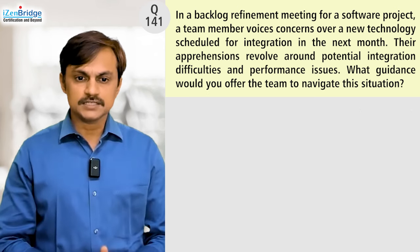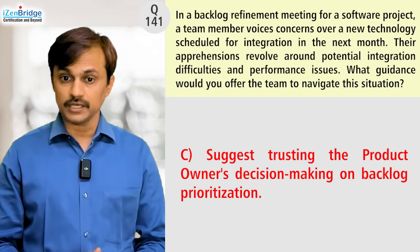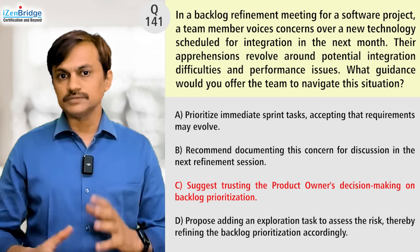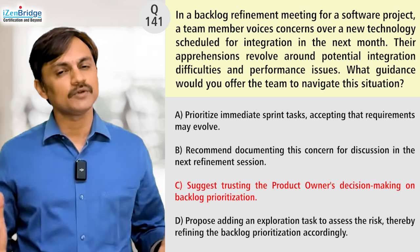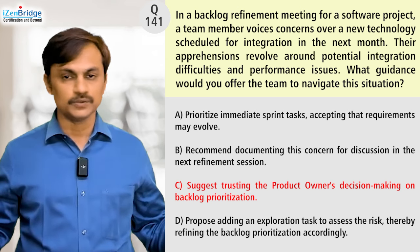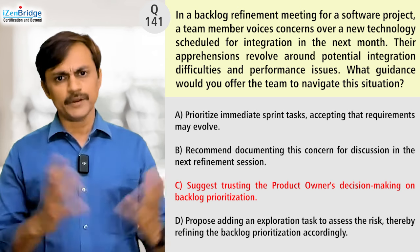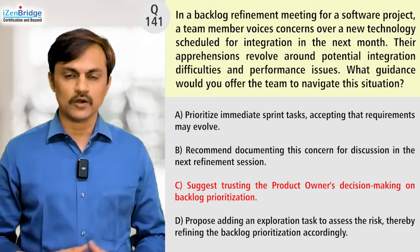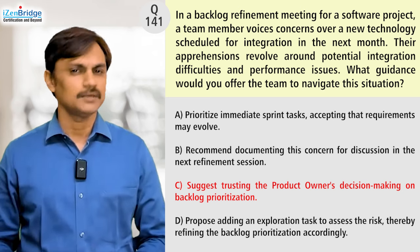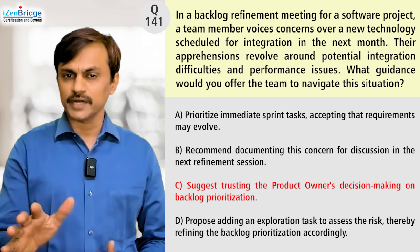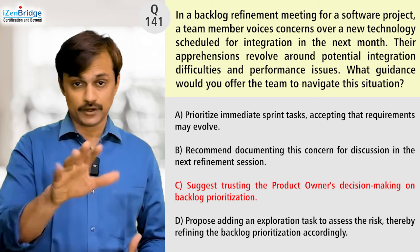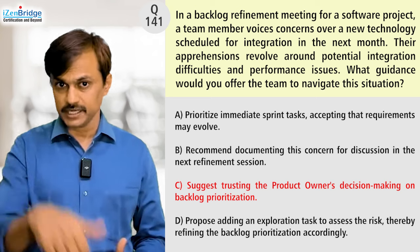Option C: suggest trusting the product owner's decision-making on backlog prioritization. This is saying why should the team member worry — let the product owner handle what comes in upcoming sprints and prioritize accordingly. That's essentially a project manager telling the team not to bother, which is not a good idea at all. So Options A and C are completely out; B remains a candidate.